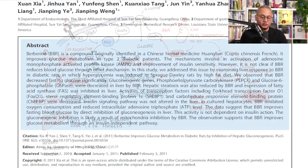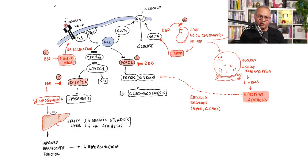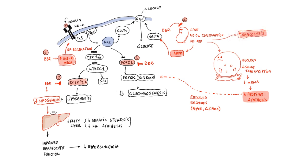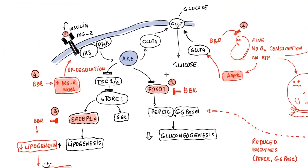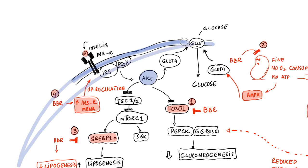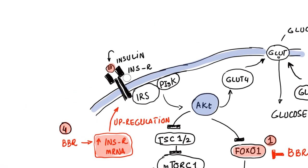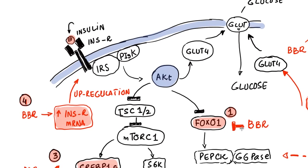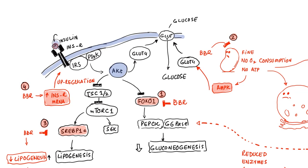Let's start with this diagram. This is a cell membrane — everything inside is internal to the cell. Here is an insulin receptor on the cell surface, labeled INSR. This little rounded thing is insulin itself. Generally, when insulin binds with an insulin receptor on the cell surface, enzymes inside the cell start working.